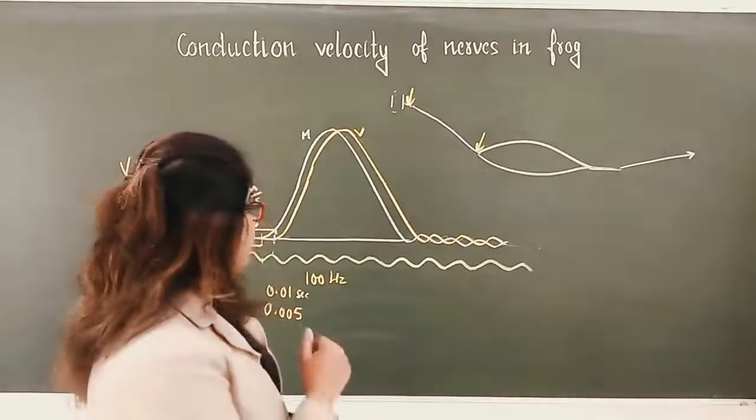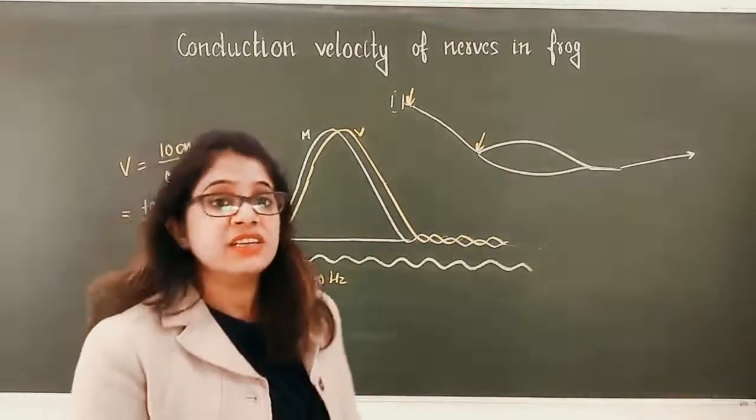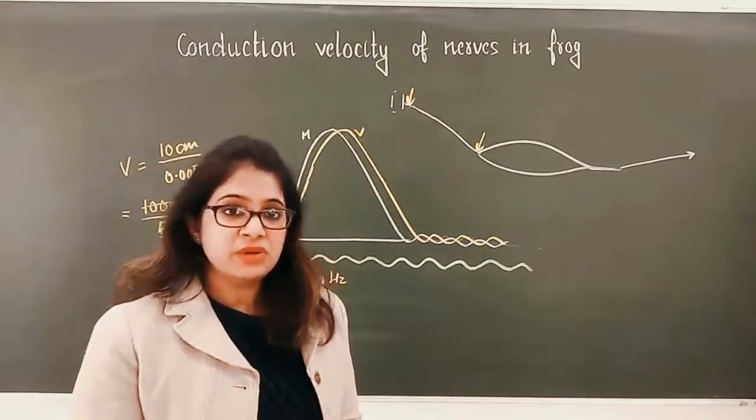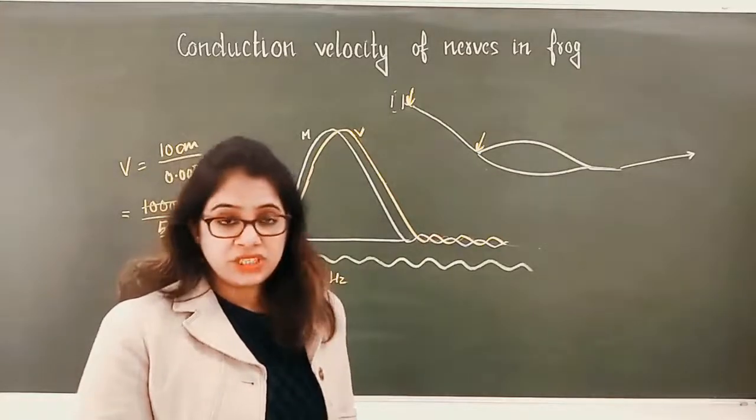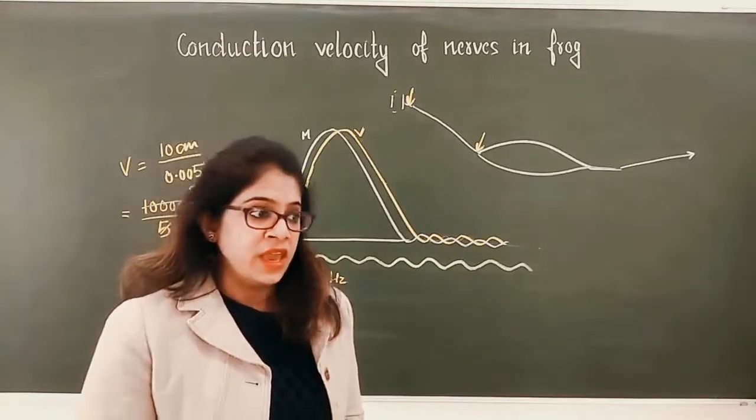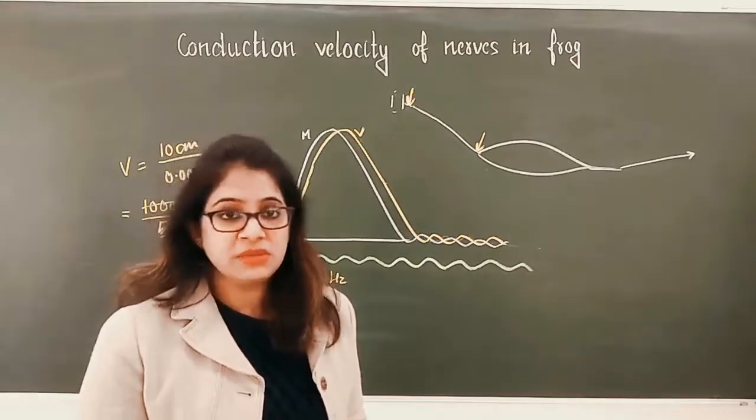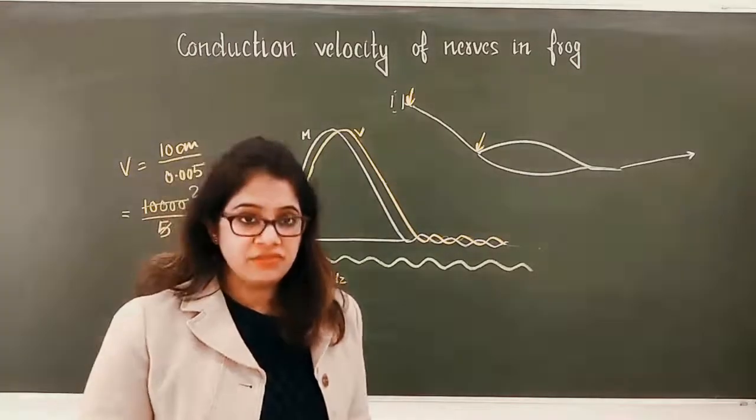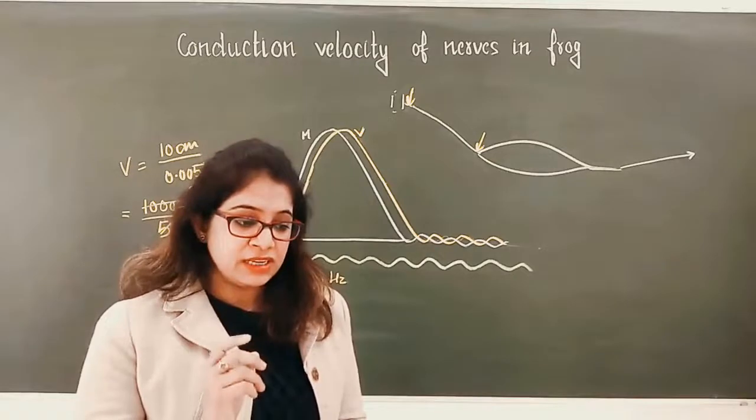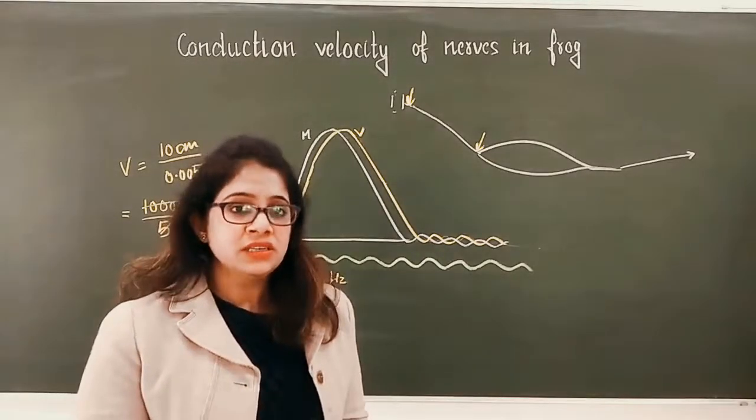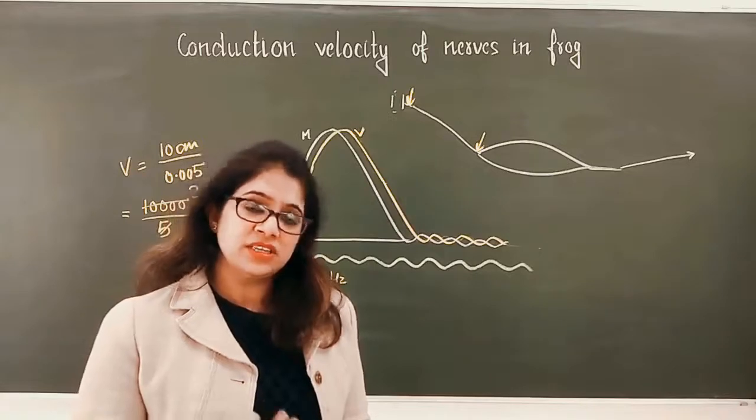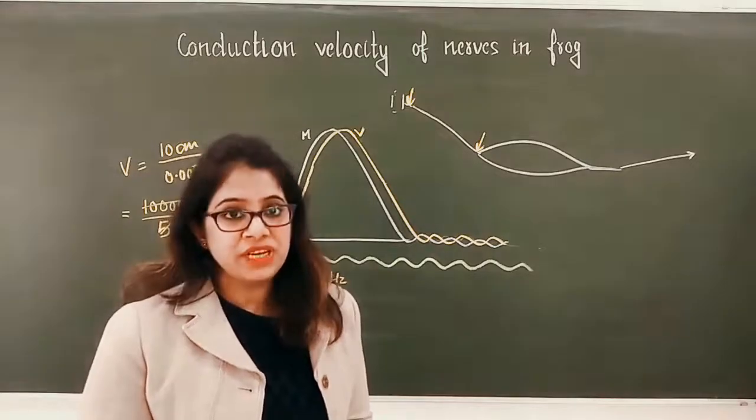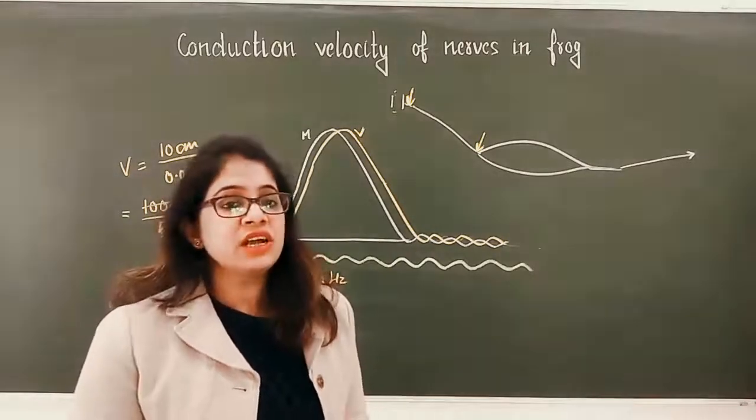Your examiner may ask what factors the velocity is dependent on. You can tell that diameter of the fiber—more the diameter, more is the velocity. Temperature—more the temperature, more is the velocity. And species to species velocity may change. In mammals, conduction velocity is more than in amphibians. Along with that, if there is myelination, the conduction velocity is higher in myelinated nerves and also depends upon the surrounding media temperature. All of these are factors affecting conduction velocity.